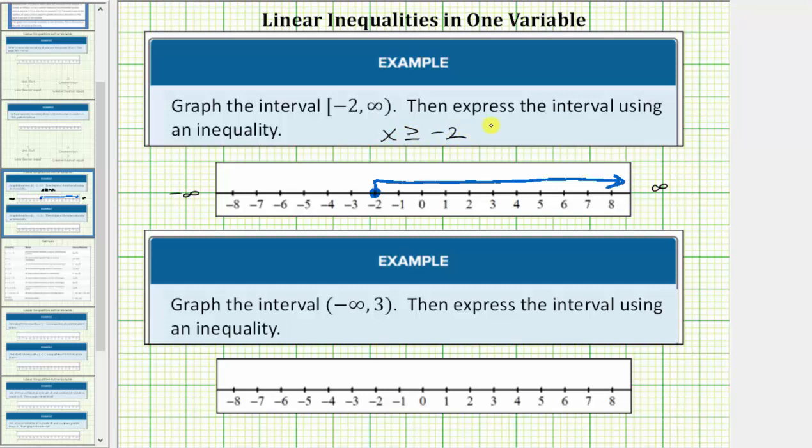Looking at our second example, we have an open parenthesis negative infinity comma three, closed parenthesis. The parenthesis to the right of three indicates the endpoint of positive three is not included in the interval, and then the interval approaches negative infinity. So this interval would be all real numbers less than positive three.